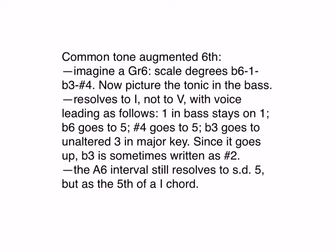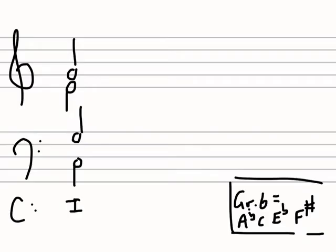Now on to the common tone augmented sixth. Imagine a German sixth: scale degrees flat six, one, flat three, and sharp four. Now picture the tonic in the bass. So here in C major, I've spelled out the German sixth: A flat, C, E flat, F sharp. The twist here is that if I were using this German sixth to go to five, I would put the A flat in the bass and then take it down to G for the five chord. What I'm going to do instead is to keep the C in the bass.